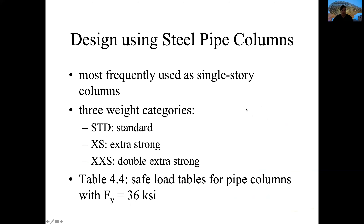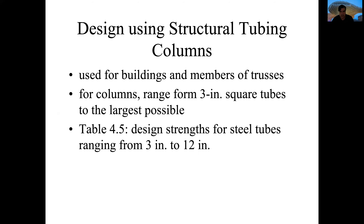When we speak about steel pipe columns, they are normally used for single-story columns. There are three types: standard, strong, and double-strong, depending on the thickness. Safe loads for A36 steel pipe columns are in table 4.4. For steel tube columns — which range from 3-inch square tubes to much larger sizes — the design safe loads are in table 4.5.